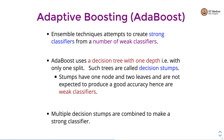Let's look at another boosting technique called adaptive boosting, or AdaBoost. AdaBoost also creates strong classifiers from a number of weak classifiers, which is the hallmark of boosting methods. AdaBoost uses a decision tree with depth one that performs exactly one split — such trees are called decision stumps. Stumps have one node and two leaves, are not expected to produce good accuracy, and hence are weak classifiers.